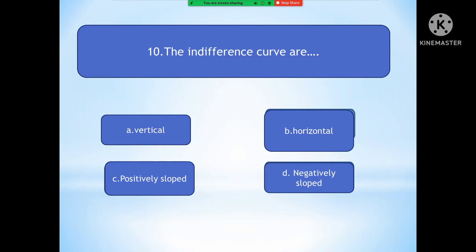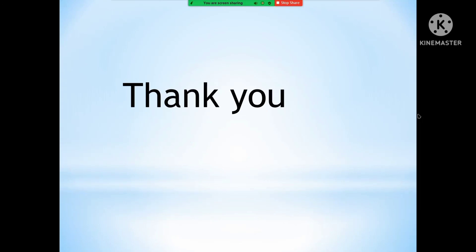Question number ten: The indifference curves are? Option A is vertical shape. Option B is horizontal shape. Option C is positively sloped. The right answer is negatively sloped. These are some of the questions related to the Consumer Behavior Theory.